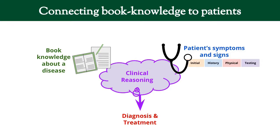Clinical reasoning is the glue between the book knowledge of a disease that you have, as well as what you found on your actual patient. We look for things in one of four different places. What clinical reasoning does is allow you to attach these things together and come up with a diagnosis and treatment for your particular patient.